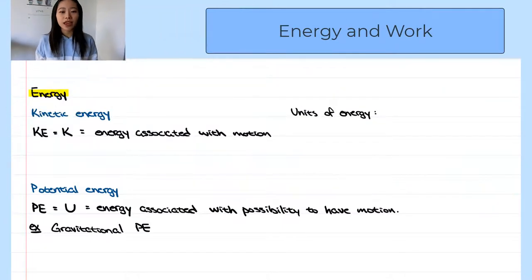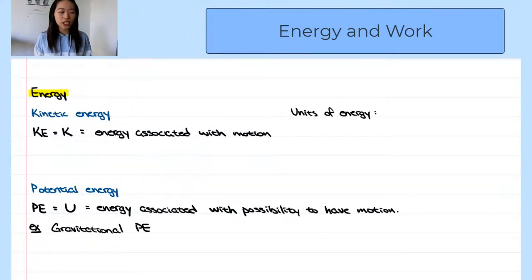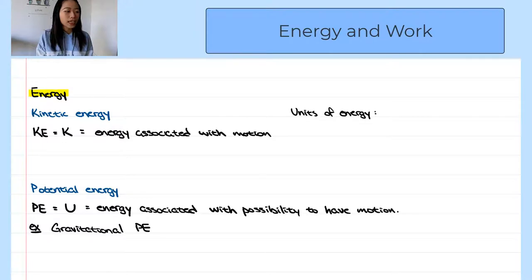There are two types of energy: kinetic energy and potential energy. Kinetic energy is the energy associated with motion, and the kinetic energy of an object is one-half times the mass of the object times its speed squared.